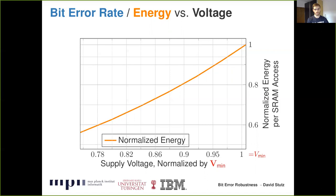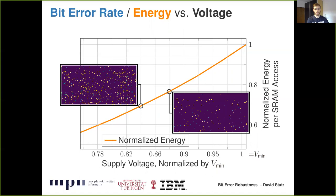Reducing the voltage of the SRAM has become a very interesting direction to reduce energy consumption. As shown here, energy consumption per SRAM access on the right can be reduced significantly at lower voltages — note both axes are normalized by Vmin, the lowest measured voltage for error-free operation. Unfortunately, SRAM arrays quickly become unreliable when reducing voltage. These maps show the bit error probability per bit cell for a small portion of SRAM at two voltage settings, and the rate of bit errors increases very quickly when reducing voltage, directly affecting DNN accuracy because DNN weights are changed.